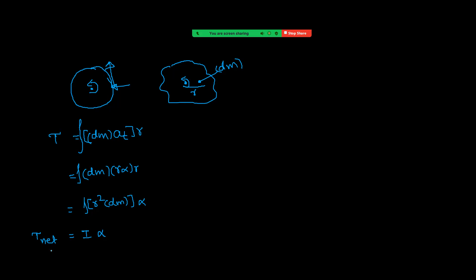Because of internal forces, net torque will be zero. That means net torque is only because of external forces. So the relation is: net torque equals I into alpha. Let us now focus on problems based on this.